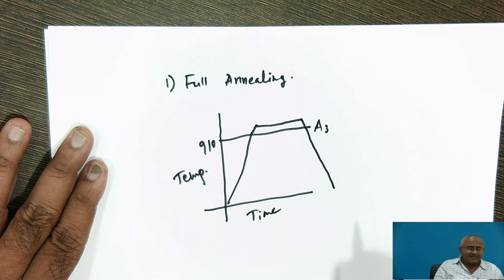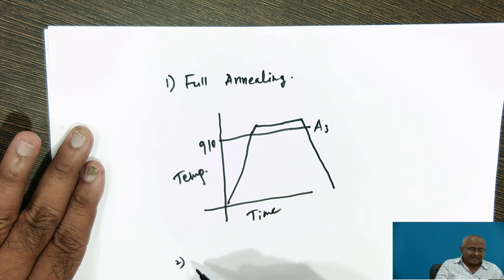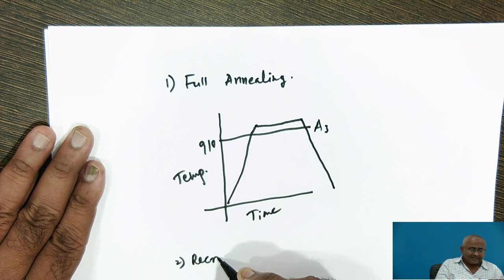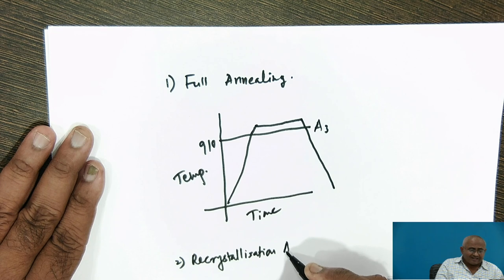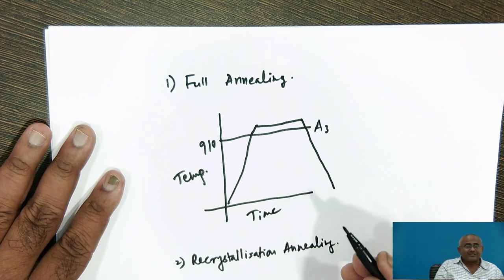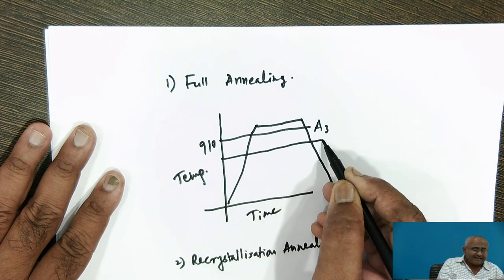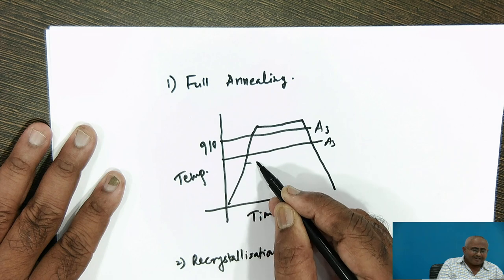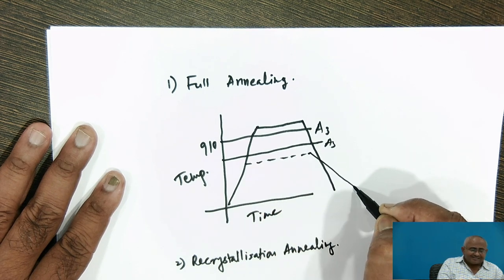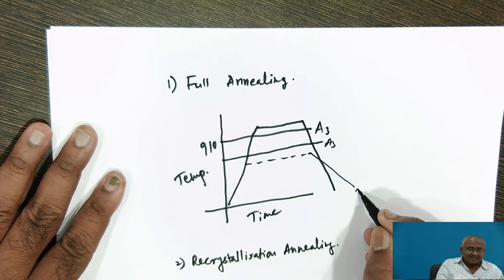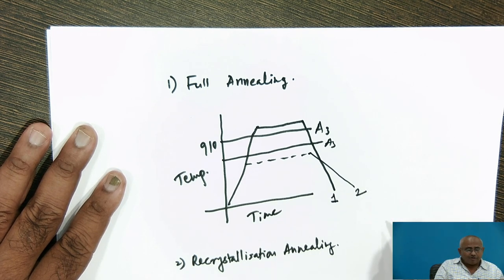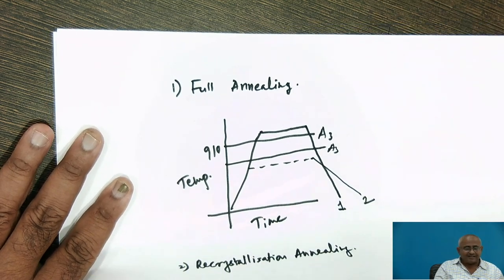The next annealing is recrystallization annealing, which is used to restore the ductility of cold worked products. In this case, the crystal structure is restored, stresses are relieved in cold worked components, and further processing can be done. This is a subcritical annealing and can be shown on the same temperature-time diagram alongside full annealing.